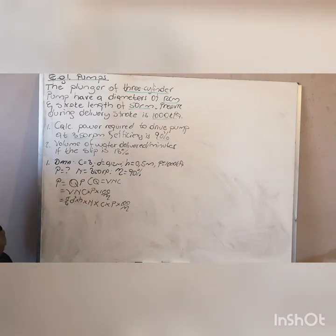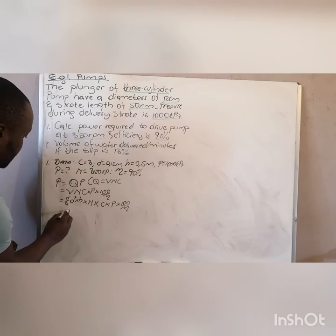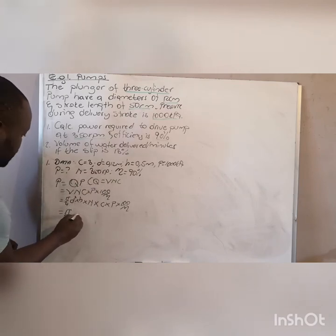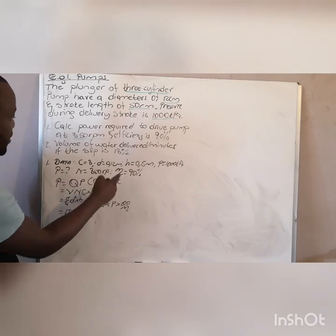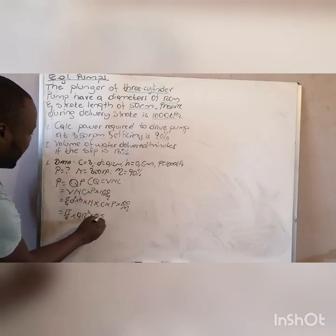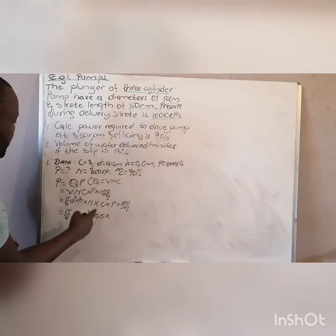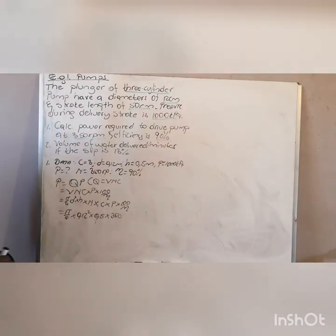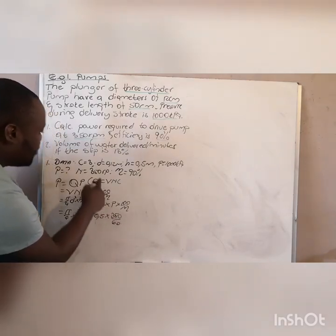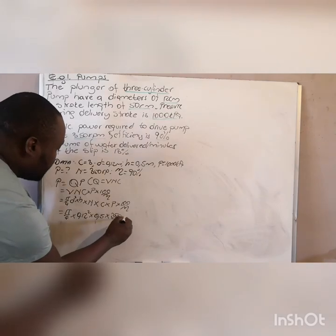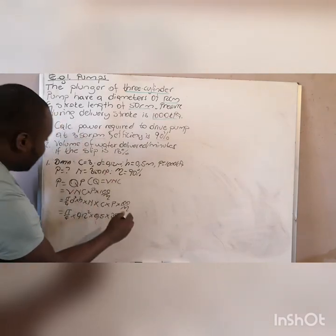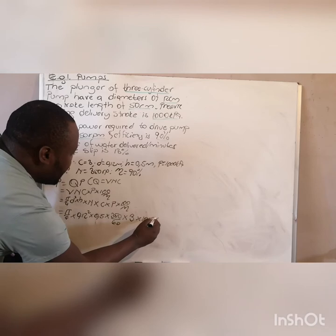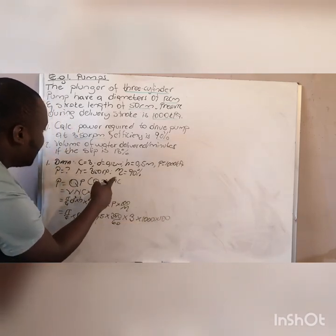Since they want the input power of the pump, we use that equation. So it's π/4 times the diameter 0.12 squared, times the stroke length 0.5, multiplied by the rotational frequency 350 — divided by 60 to convert rev per minute to rev per second, because power is in joules per second — multiplied by the number of cylinders 3, multiplied by the pressure 1000, times 100 over the efficiency of 90.